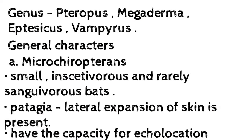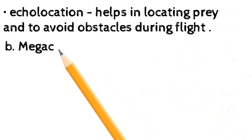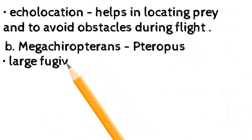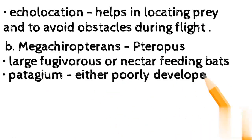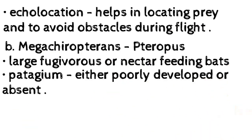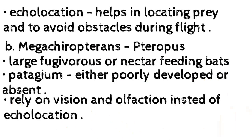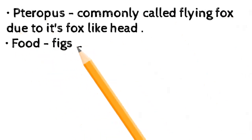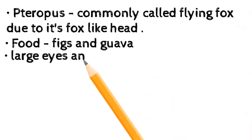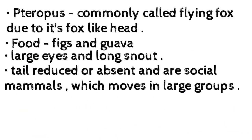Megachiropterans — genus Pteropus — are large frugivorous or nectar-feeding bats. Patagium is either poorly developed or absent; they rely on vision and olfaction instead of echolocation. Pteropus is commonly called the flying fox due to its fox-like head. Food includes figs and guava. Large eyes and long snout; tail reduced or absent. Social mammals that move in large groups.